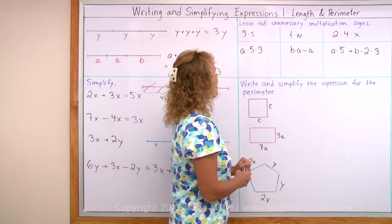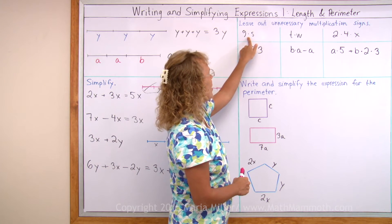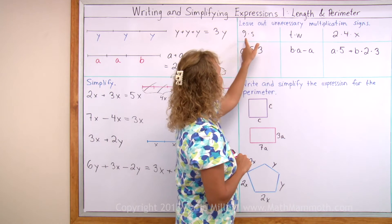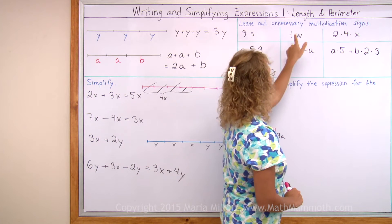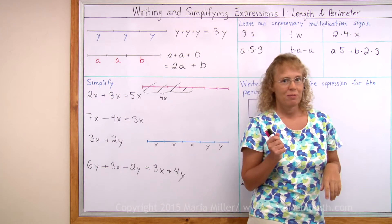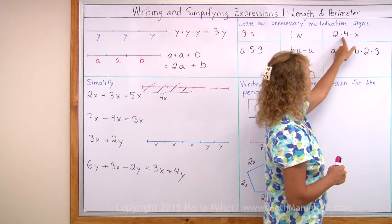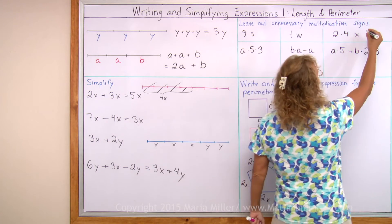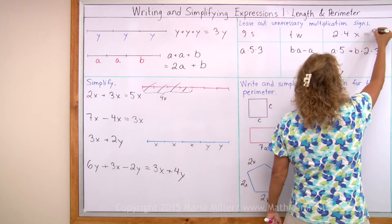Now we're going to simplify again. First, let's practice leaving out unnecessary multiplication signs. In algebra we use the raised dot for multiplication, but we do not use it between letters or between a number and a letter. So 9 times s is written as 9s. t times w is written as tw. However, for 2 times 4 times x, I cannot erase the dot between the two numbers — it would make it 24. So I leave the multiplication sign between two numbers, but not between the number and x. Normally this would be simplified: 2 times 4 equals 8, so it becomes 8x.